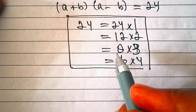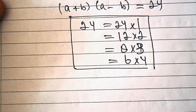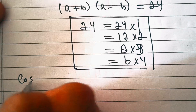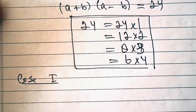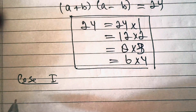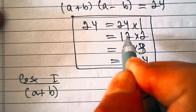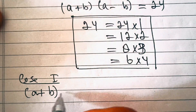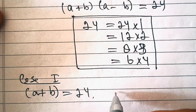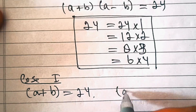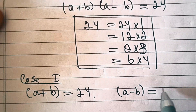So we have four cases here and we will see them one by one. Case one: if a plus b equals 24 and a minus b equals 1.